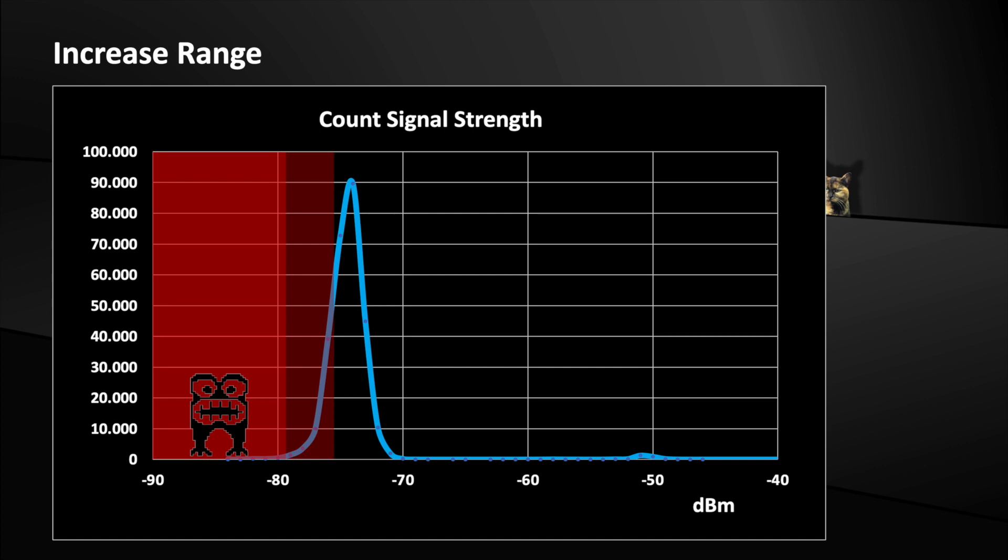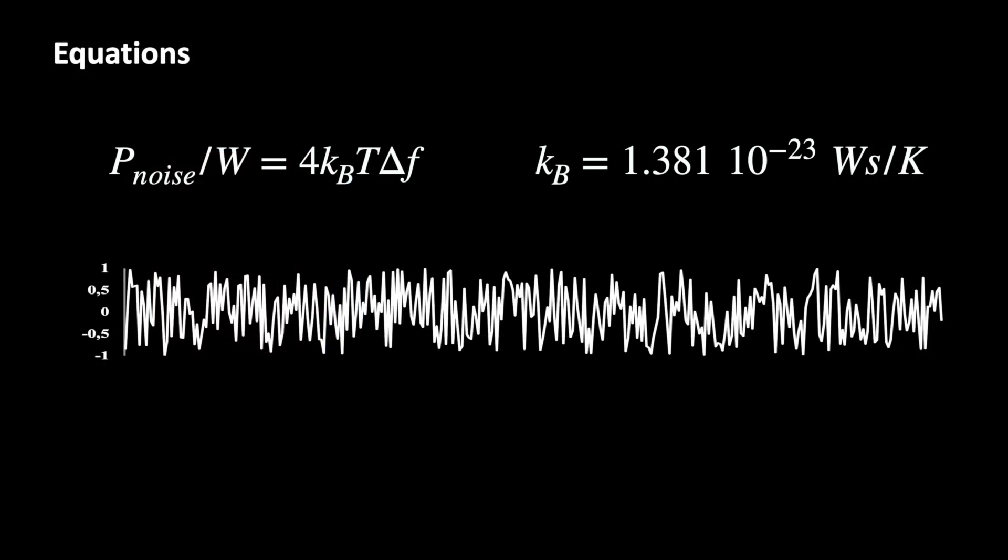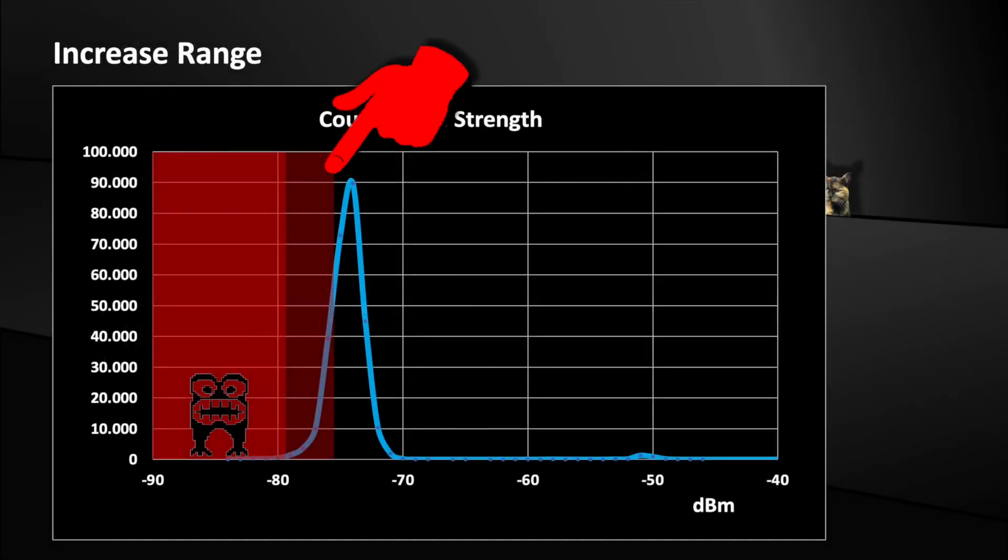You can cool the receiver. This is no joke. As we can see in our equation, the noise power increases proportionally to the absolute temperature in degrees Kelvin. So, if we make the temperature very small, then the noise power will also be very small and the receiver sensitivity will be very high. This would simply move the red area further to the left. This method is actually used with receivers for radio astronomy, where the receiver front end is cooled down to a few degrees Kelvin.